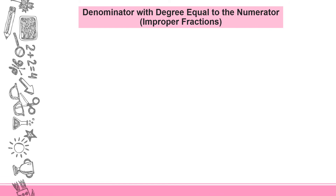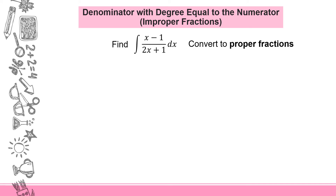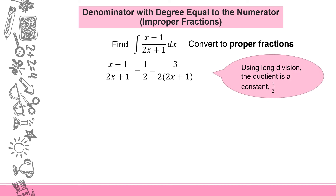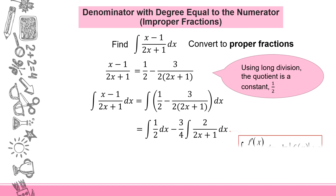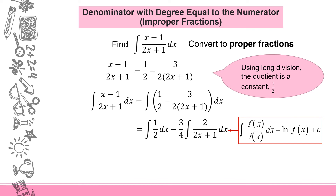Next, the same process integrates an improper fraction where the degrees of the numerator and denominator are equal. We convert to a proper fraction using long division: the quotient is the constant 1 over 2, and the remainder forms the partial fraction negative 3 over 2 times (2x plus 1). Integrating separately and applying the integration rule for the partial fraction, the final answer is x over 2 minus 3 over 4 times ln|2x plus 1| plus c.